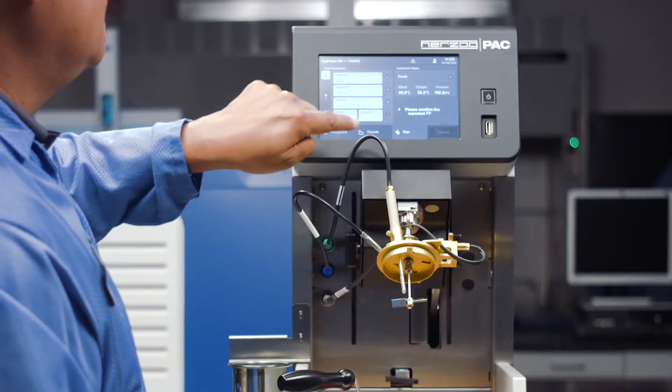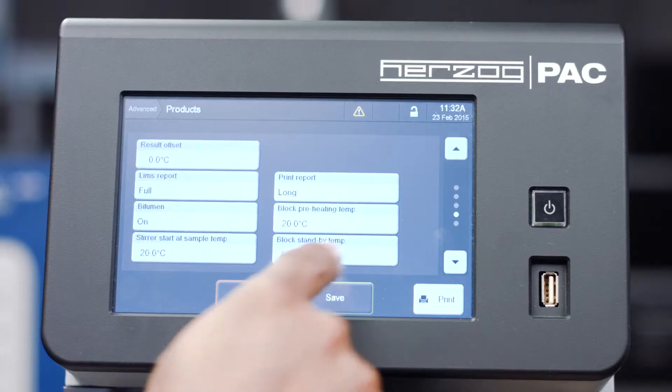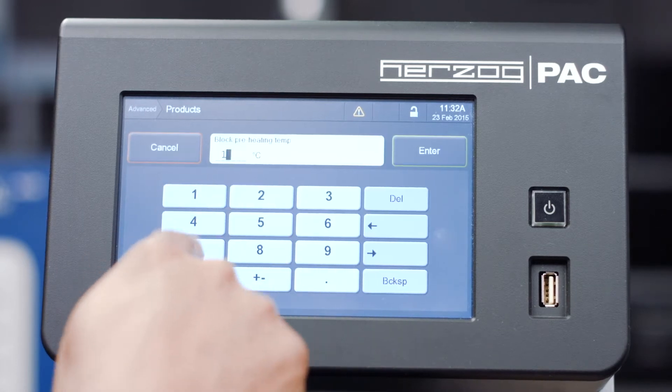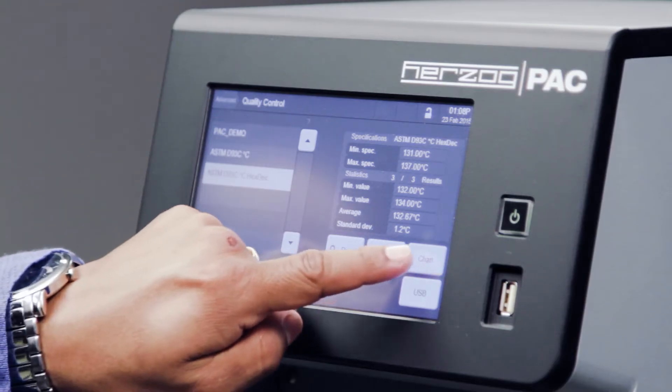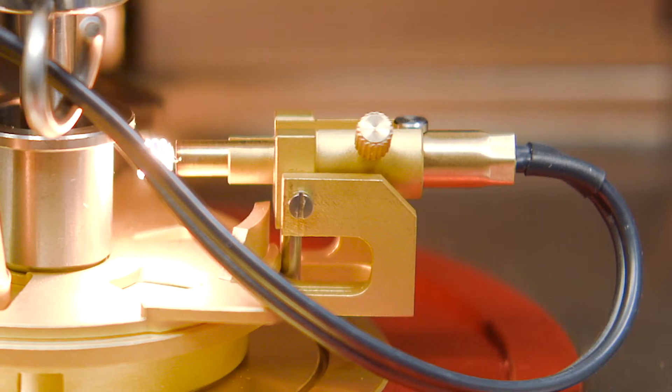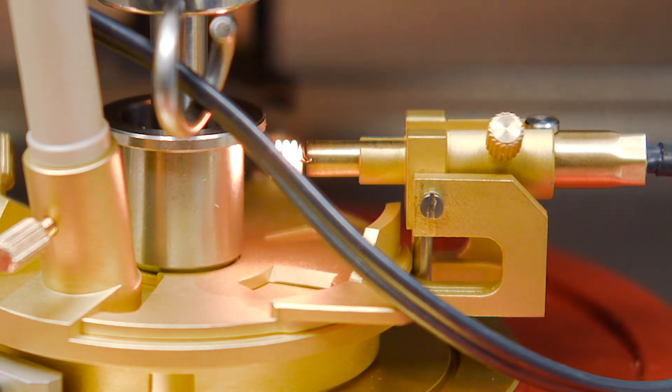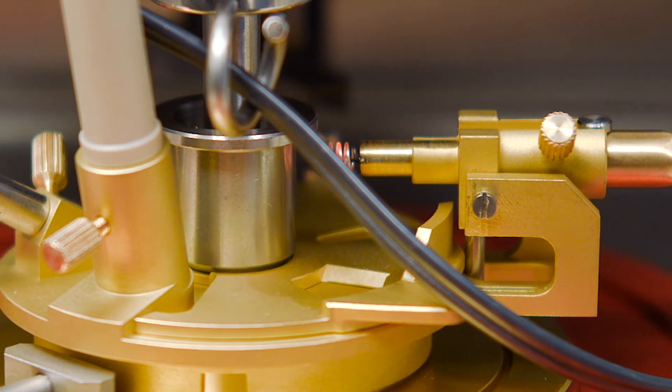The new OptiFlash also includes built-in quality control functions, which allow users to enter specification limits by product. The OptiFlash can then provide a pass-fail result for simple test analysis. In addition, the igniter on the unit is continuously monitored so that the users can perform preventative actions to avoid downtime.